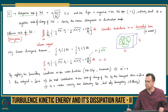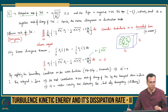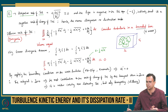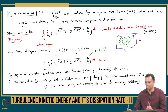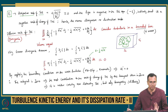So, is it okay to understand this particular term? The dissipation rate — we understood why it is called dissipation rate. The diffusion rate — we understood why it is called diffusion rate. The only term left in the equation is the production rate. For that, I need to derive one more equation, and that equation itself will tell you that it is a production rate. So we will stop here.